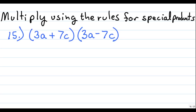For question 15, the instructions read: multiply using the rules for special products. Before discussing the special product rule, let's look at what you might first attempt if you forgot those rules. We have a binomial multiplied by a binomial, so we can use what's called the FOIL method.